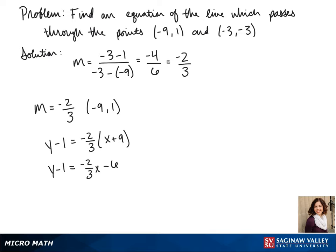Next, we add 1 to the other side and that gives us y equals negative 2 thirds x minus 5. So this is our equation in slope-intercept form.